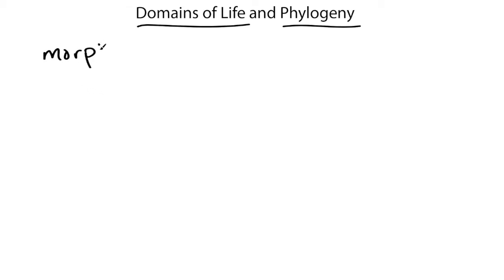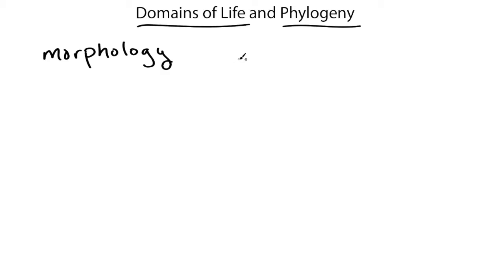Most paleontologists use the morphology of organisms to understand how they have evolved, and this is particularly good for things like animals and plants that have a more complicated morphology. All of the organisms with backbones share a common ancestor that evolved that structure and then it was passed on to its descendants through time.